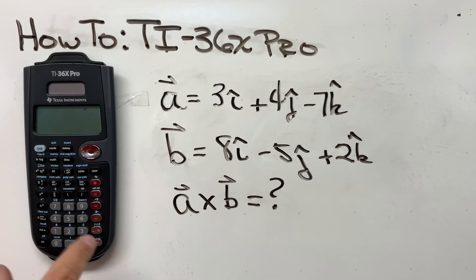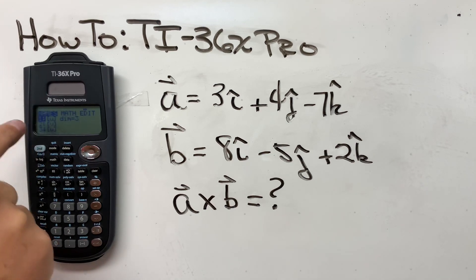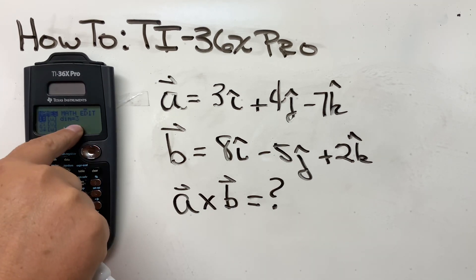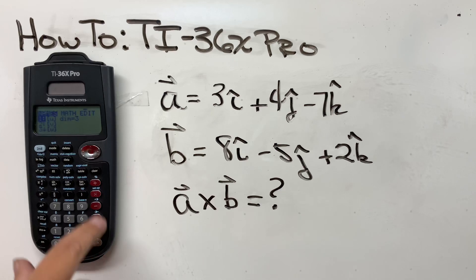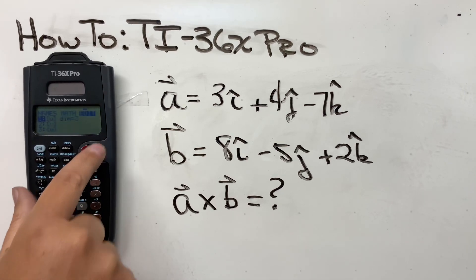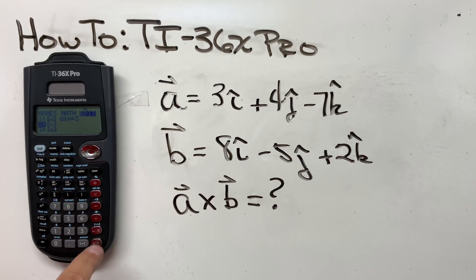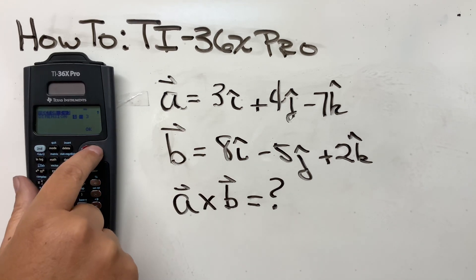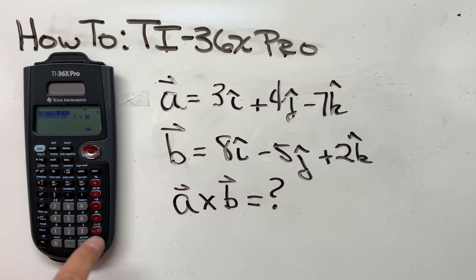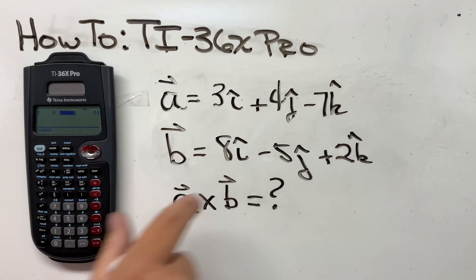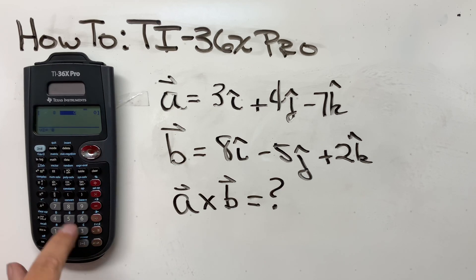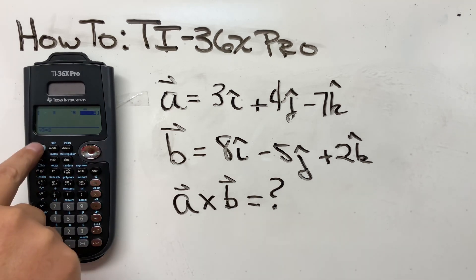So we can go second, quit, and then we can go back to the vector, and you'll see now that U has something stored in it. So we'll go back over to edit, and let's go down to vector V, and let's put this guy in for vector V. So enter, three dimension again, OK. And then here we go. We've got eight, enter, negative five, enter, two, enter. So now we have both.